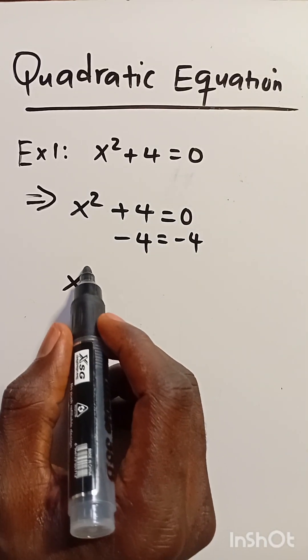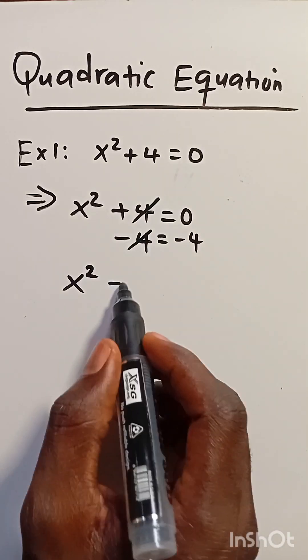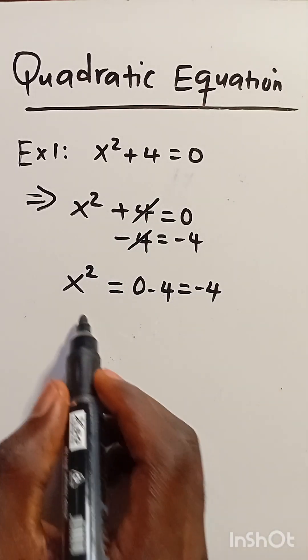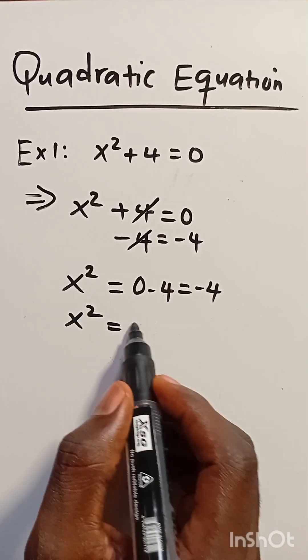From here we have x squared. This cancels out because 0 minus 4 equals minus 4. So x squared equals minus 4.